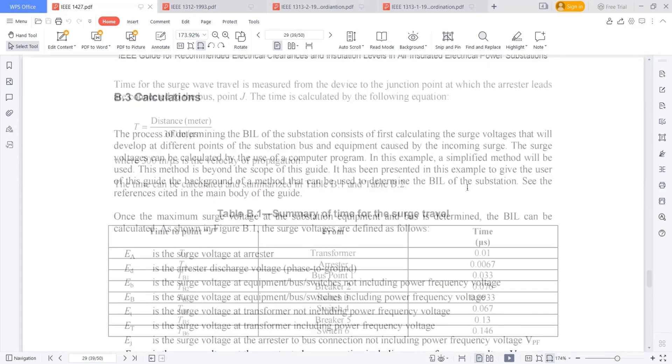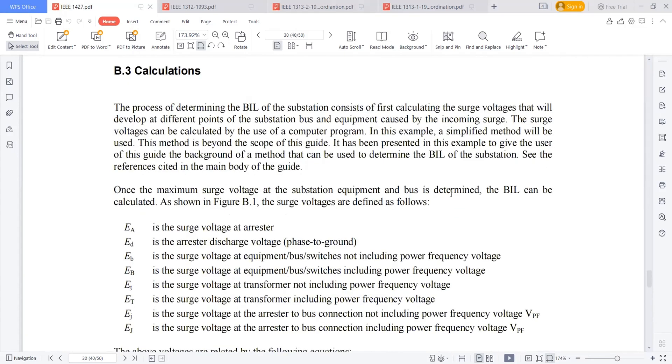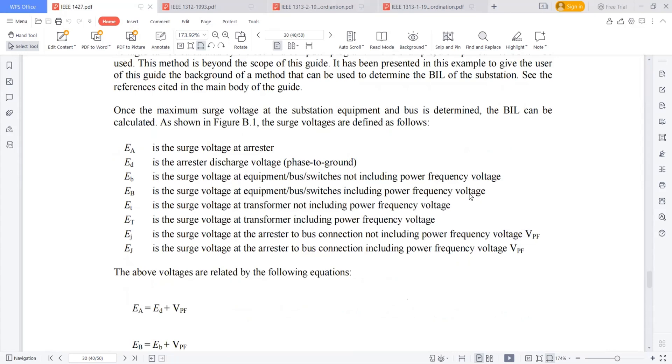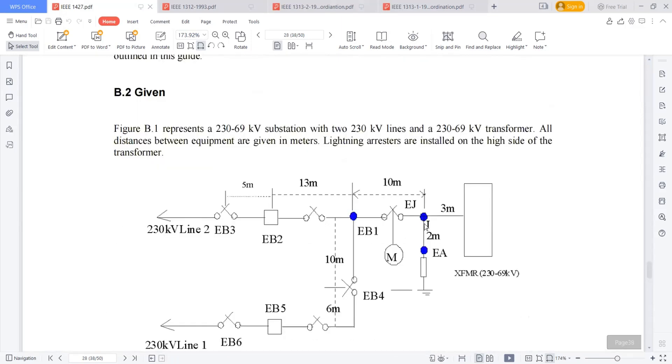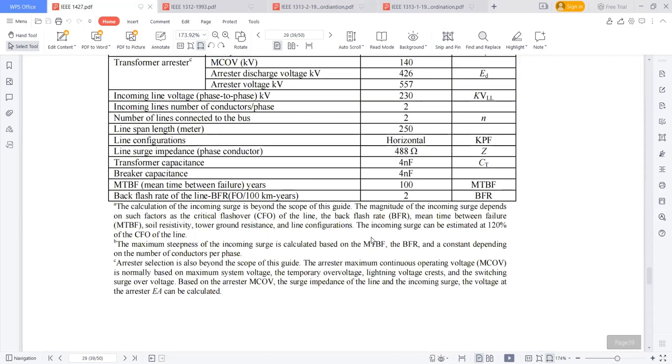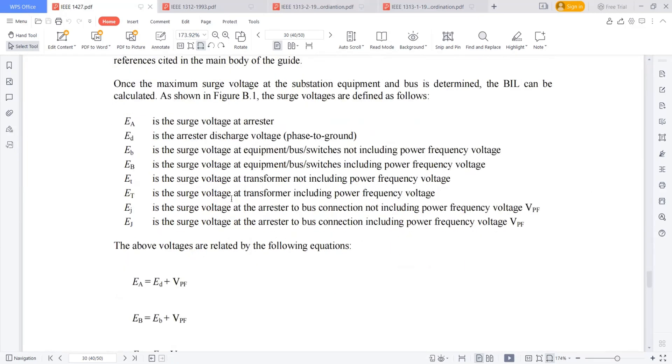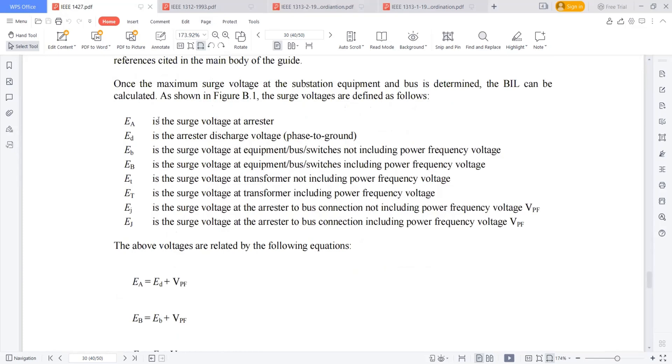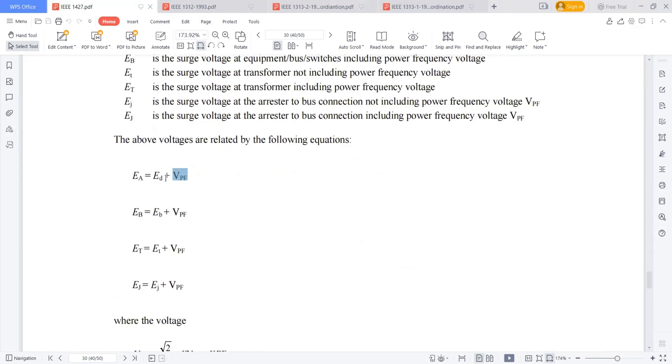After getting these inputs, then I am moving to the next step where I am calculating the voltage appearing at all these places when a surge occurred. I am calculating the surge voltages at all the places. This can be calculated by using these formulas. EA, which is the surge voltage at the arrestor, is equal to ED plus VPF. VPF is a power frequency voltage. And ED is the discharge voltage of the lightning arrestor.